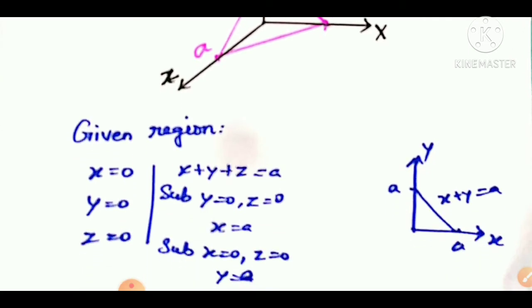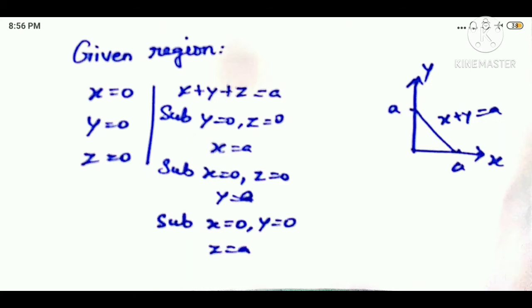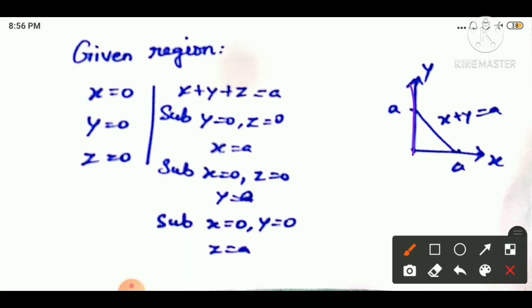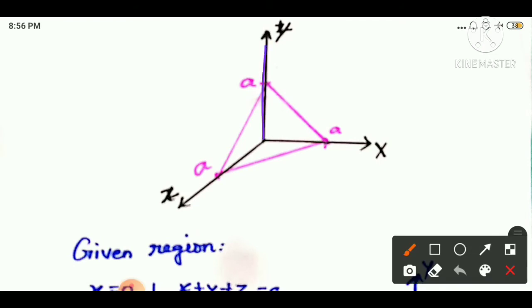We have three axes. x equals 0 is the y-z plane, y equals 0 is the x-z plane, and z equals 0 is the x-y plane. So the region is in the first octant, bounded by all three coordinate planes.